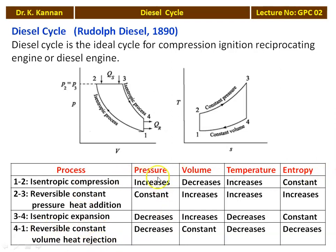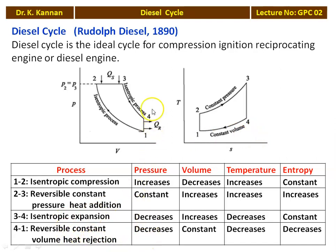The variation of parameters: for isentropic compression, pressure increases from P1 to P2, volume decreases from V1 to V2, temperature increases from T1 to T2, and entropy remains constant. For reversible constant pressure heat addition, pressure is constant (P2 = P3), volume increases from V2 to V3, temperature increases, and entropy increases. For isentropic expansion, pressure and temperature decrease while entropy remains constant (S3 = S4). For reversible constant volume heat rejection, pressure decreases from P4 to P1, volume remains constant, temperature decreases, and entropy decreases.